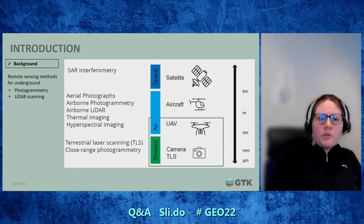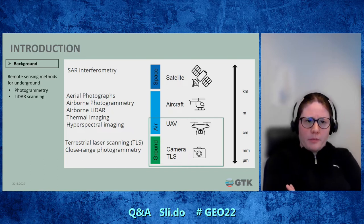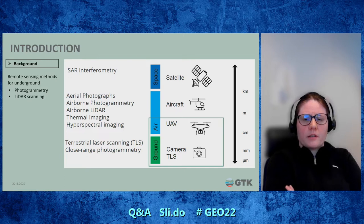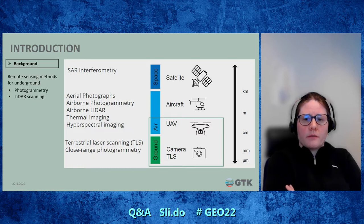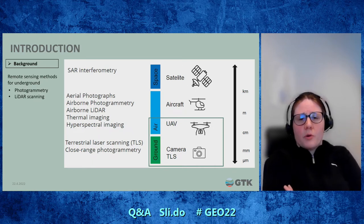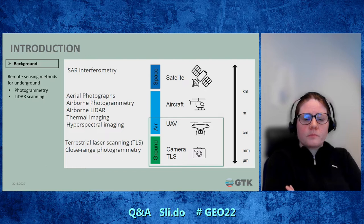Concerning remote sensing methods, there are a wide range of different methods, but when we talk about underground, I would say that photogrammetry and different kinds of laser scanning will do the work. They can be digital cameras taking photographs, laser scanners — either static stations or mobile scanners — or in some cases you can fly a drone in an underground space.